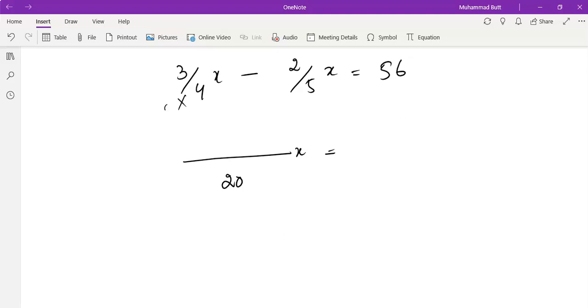And 4 will be multiplied by 5. 3 will also be multiplied by 5 in order to get 20. 5 will be multiplied by 4. 2 will also be multiplied by 4. So 15 minus 8x equals to 56. Sorry, 7 by 20x equals to 56.